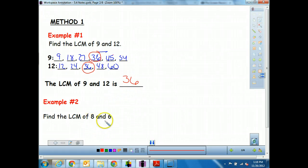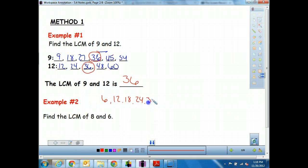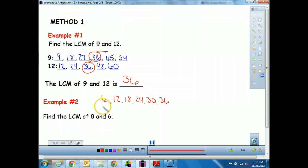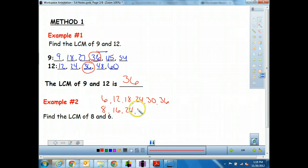So if we wanted to do that for 8 and 6, let's go ahead and quickly try the first method. So 6 would be 6, 12, 18, 24, 30, 36. That's as far as I'm going to go. We'll see if I can find one in there. Then for 8, I'm going to start 8 times 1. Then I have 16, 24, 32, and 40.